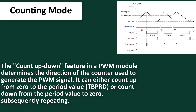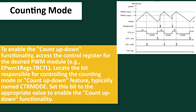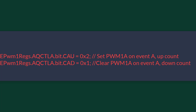Counting Mode. The count up-down feature in a PWM module determines the direction of the counter used to generate the PWM signal. It can either count up from 0 to the period value (TBPRD), or count down from the period value to 0, subsequently repeating. To enable the count up-down functionality, access the control register for the desired PWM module, for example EPWM1regs.TBCTL. Locate the bit responsible for controlling the counting mode, typically named CREMode, and set this bit to the appropriate value.